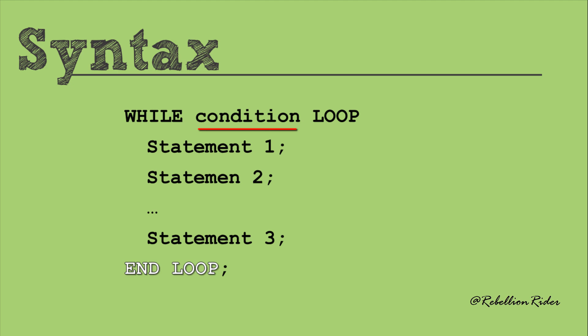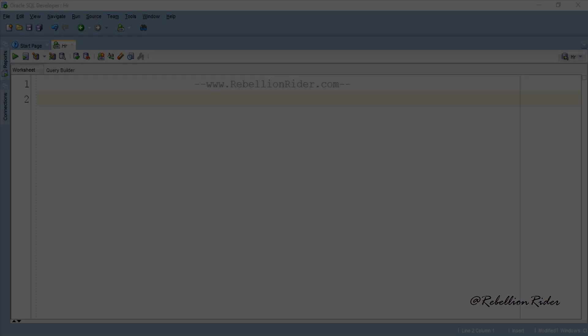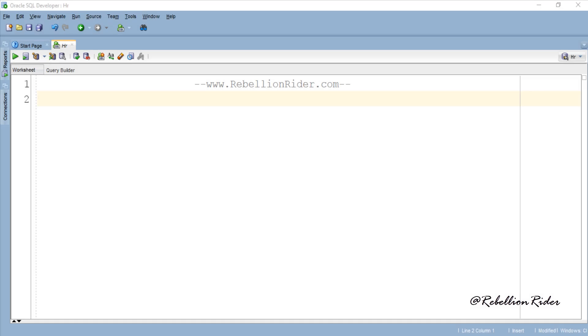This iteration will continue until the test condition becomes false. As soon as the test condition is evaluated to be false, the control will come out of the loop and execute the statement which immediately follows the loop. Since the while condition is evaluated before entering the loop, it is possible that the loop body may not execute at all. Hope this made the concept of while loop clear to you.